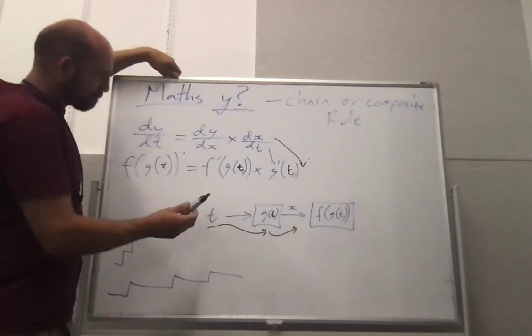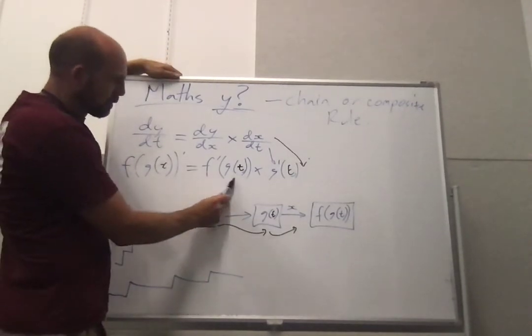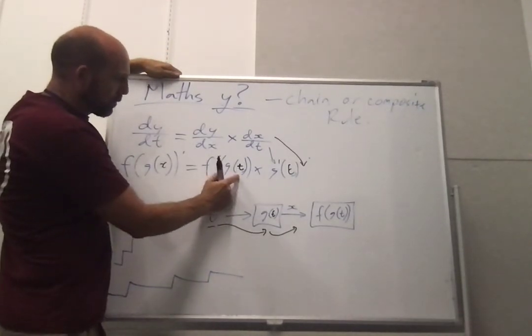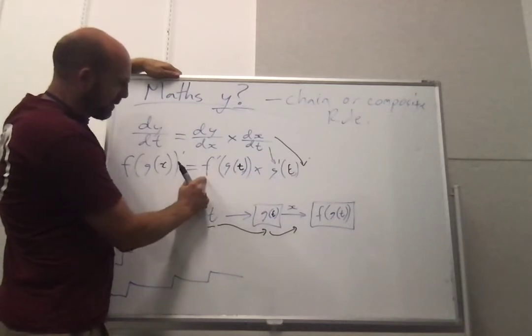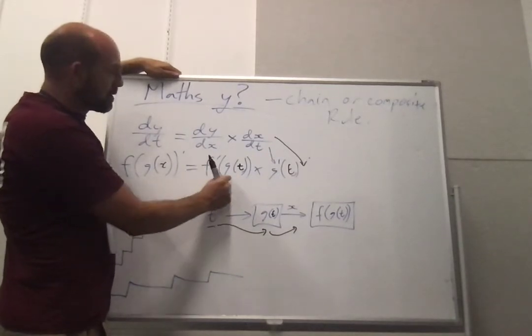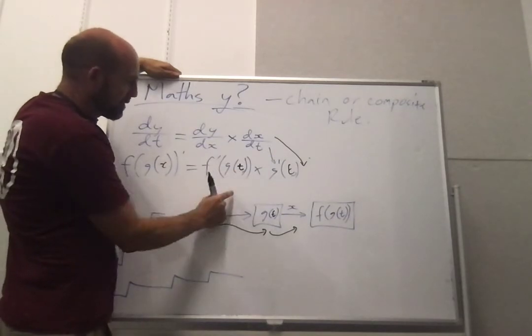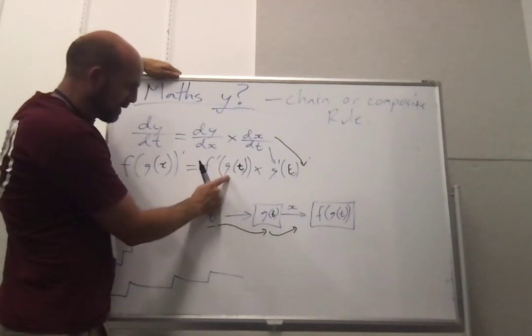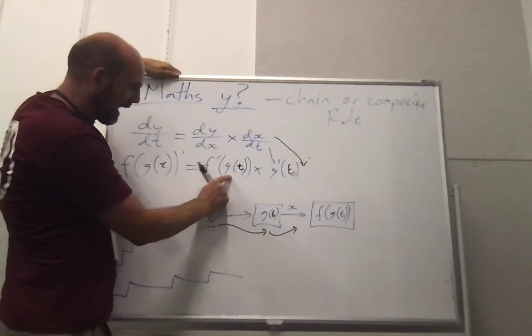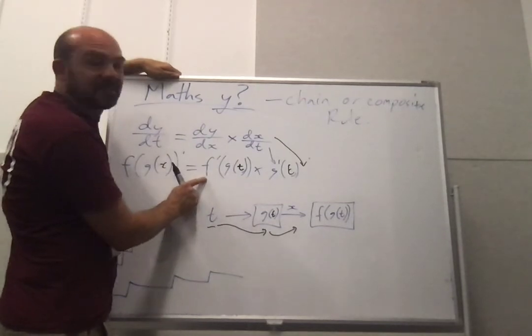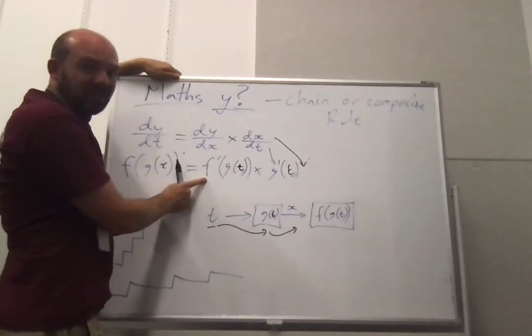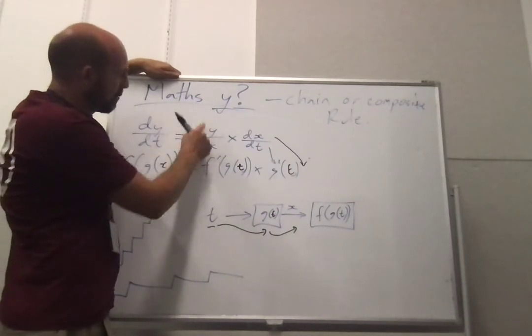So here what we need to be able to do is to put an x value into this function. So we use the g to turn it into our x value to tell us where we are on the steps, and then we ask how steep are the steps in that place. So that's how it relates to this.